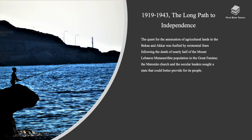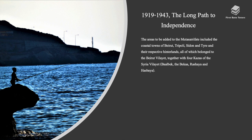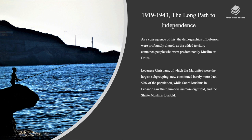The Maronite church and secular leaders sought a state that could better provide for its people. The areas to be added to the Mutasarrifate included the coastal towns of Beirut, Tripoli, Sidon, and Tyre, and their respective hinterlands, all of which belonged to the Beirut vilayet together with four cazas of the Syria vilayet. As a consequence, the demographics of Lebanon were profoundly altered, as the added territory contained people who were predominantly Muslim or Druze. Lebanese Christians, of which the Maronites were the largest subgrouping, now constituted barely more than 50% of the population, while Sunni Muslims in Lebanon saw their numbers increase eightfold and Shiite Muslims fourfold.